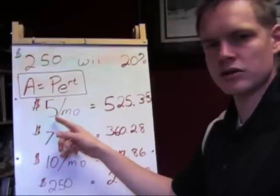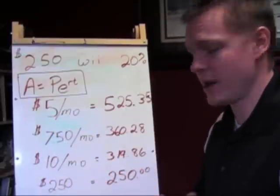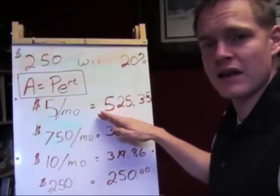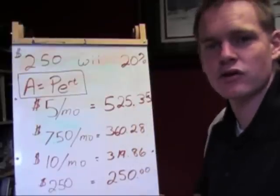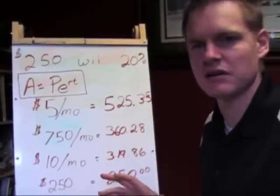If I were to pay $5 per month for my Wii gaming system, it'll take me about nine years to pay it off. And the total I'll end up giving them in the long run is about $525.35, give or take a little bit.